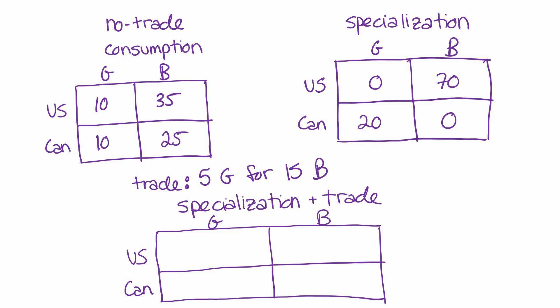But look what happens when we actually implement the trade. So if we're trading five guns for 15 butter, we can figure out who's getting the guns and who's getting the butter. Because if you're not making any guns, you can't be the one giving up the guns and vice versa.